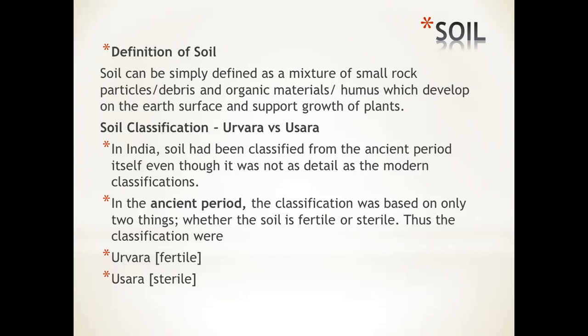Soil has been classified into two different types depending upon the ancient period. It has been categorized into two types: urwara and uswara. Urwara is fertile land and uswara is infertile or sterile land. So in the ancient period, the classification was based only on whether the soil is fertile or not fertile — a classification based upon the fertility of the soil.